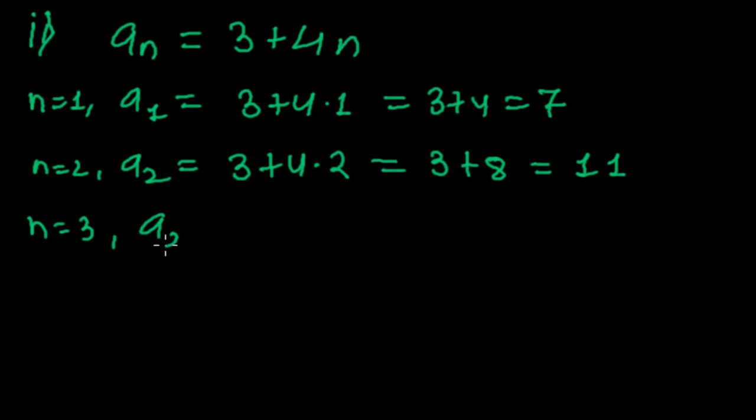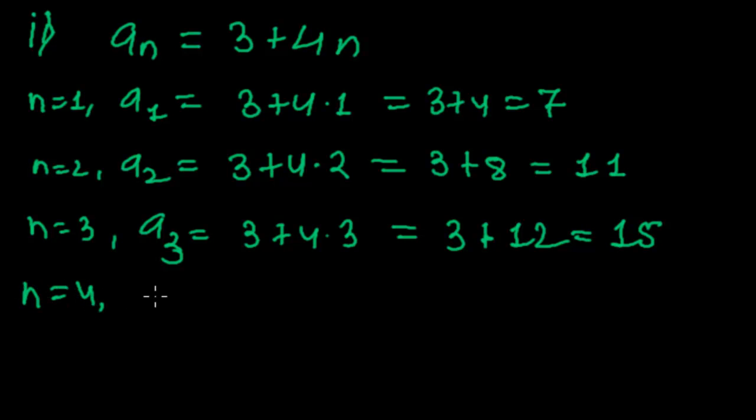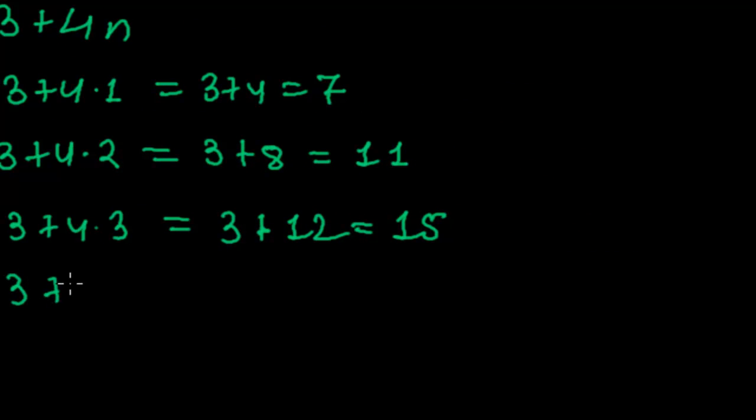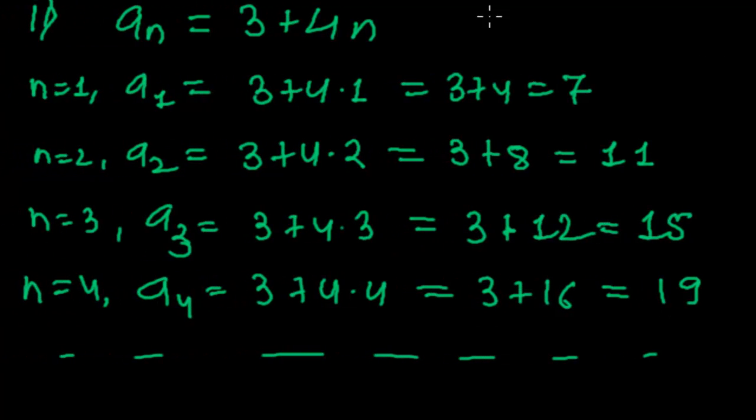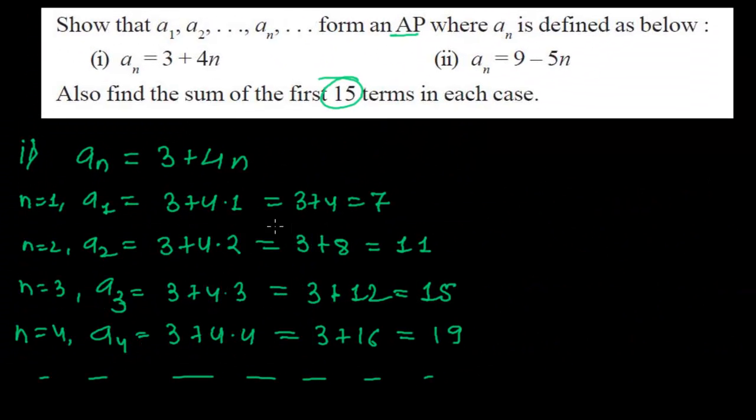Again when n equals to 3, a₃ will be 15. And let me find a₄. When I put n = 4, I will get the fourth term that will be 3 + 4 × 4 = 3 + 16 = 19, and so on. So our sequence is: first term 7, second term 11, third term 15, fourth term 19, and so on.